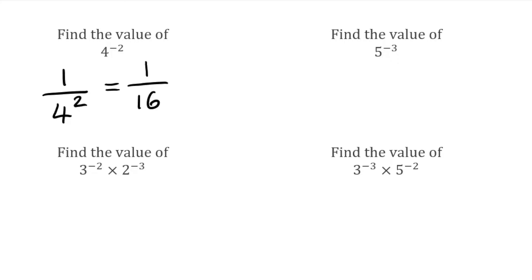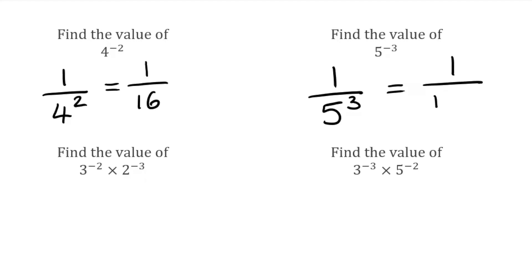For this next question, we've got 5 to the power of negative 3. Our negative indice tells us to put 1 over, then 5 to the positive power of 3. So we have 1 over 5 cubed; 5 cubed is 125, so our final answer would be 1 over 125.